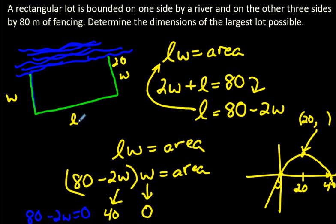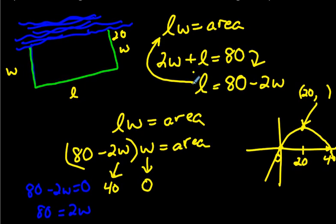What would the length be then? You can use our formula up here if you like. If we want to find the length, let's use this right here. If we want to know the length, all we do is take 80 minus 2W. Well, we found W to be 20. W is 20. So you just sub that in there. It's like saying 80 minus 2 times 20. 80 minus 40. 80 minus 40 is 40.